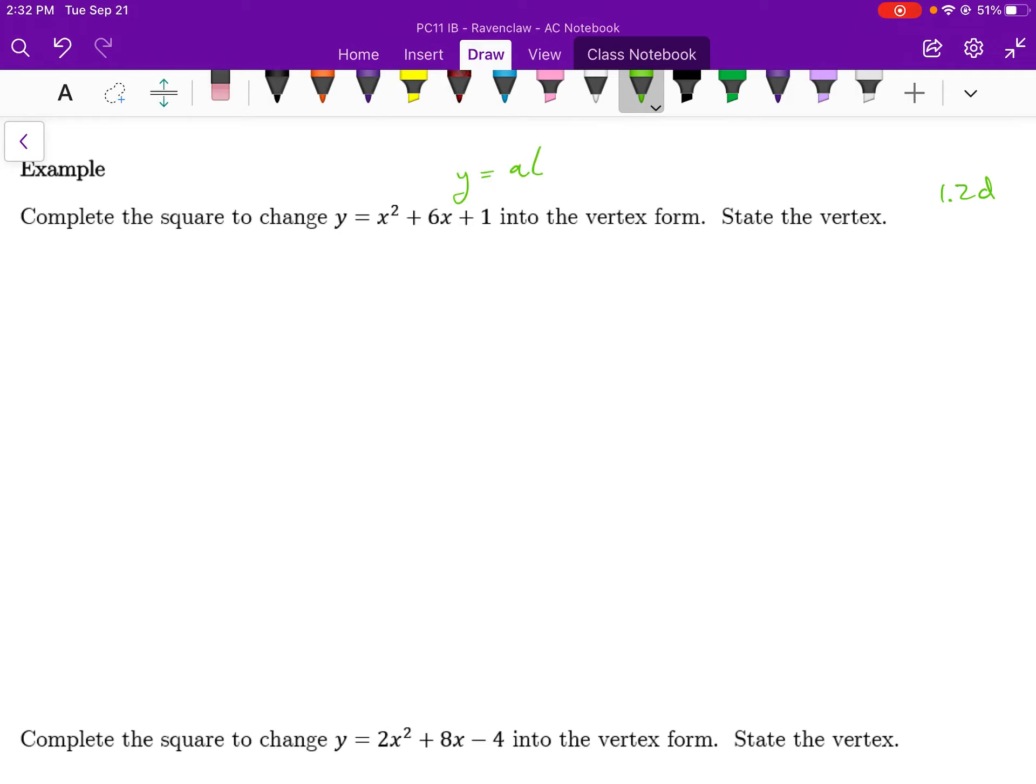Recall that vertex form is y equals a times x minus h squared plus k. We are going to force our equation to have a perfect squared factor in there.